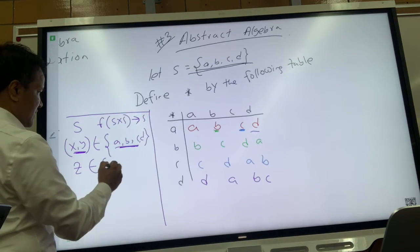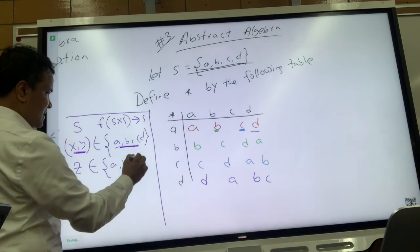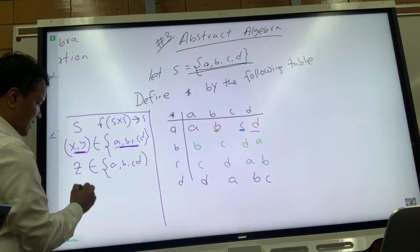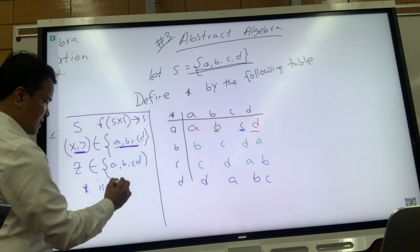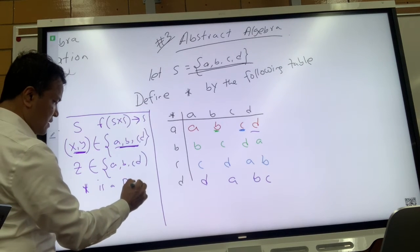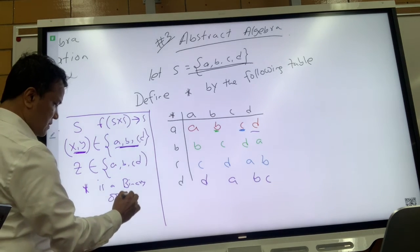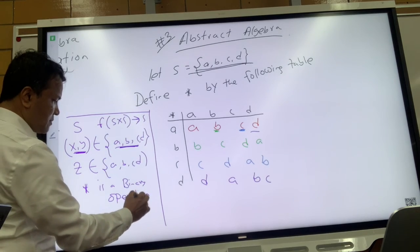So what that means is that star is a binary operation, that any two elements you pull out from these four elements will map to one element, and that one element also would belong to the set.